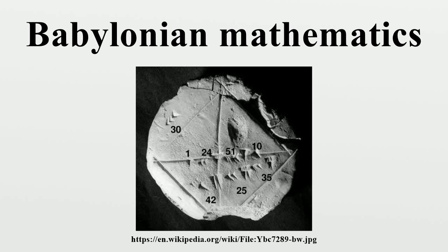Babylonians knew the common rules for measuring volumes and areas. They measured the circumference of a circle as three times the diameter and the area as one twelfth the square of the circumference, which would be correct if Pi is estimated as three. The volume of a cylinder was taken as the product of the base and the height; however, the volume of the frustum of a cone or a square pyramid was incorrectly taken as the product of the height and half the sum of the bases. The Pythagorean theorem was also known to the Babylonians.